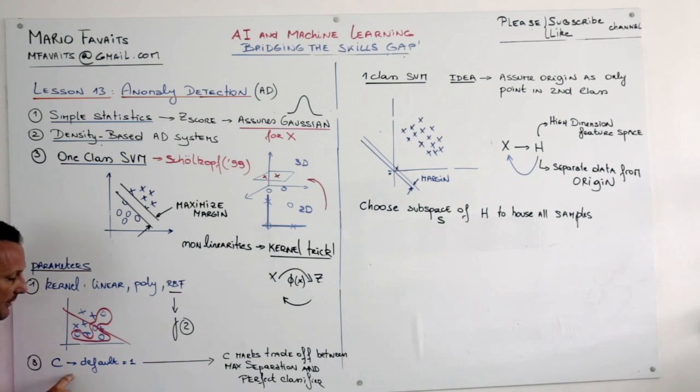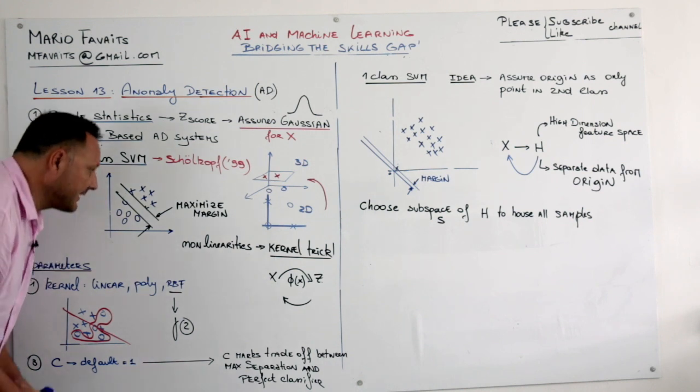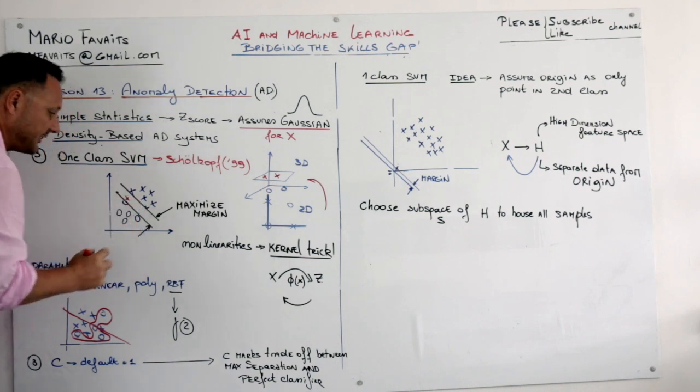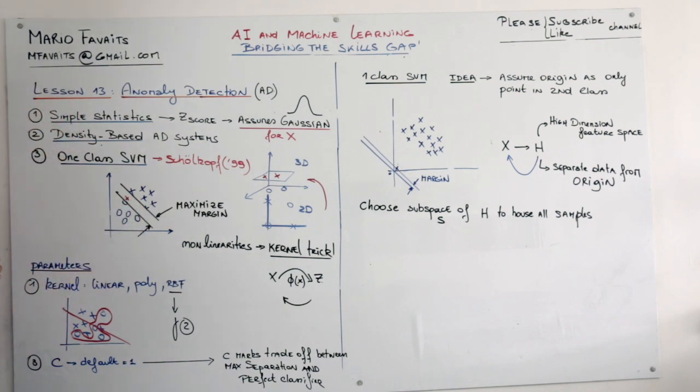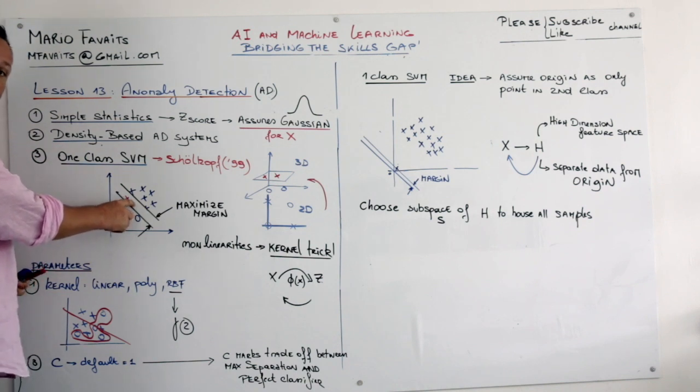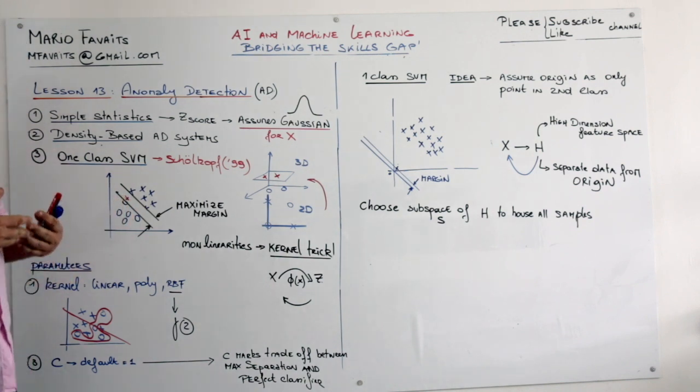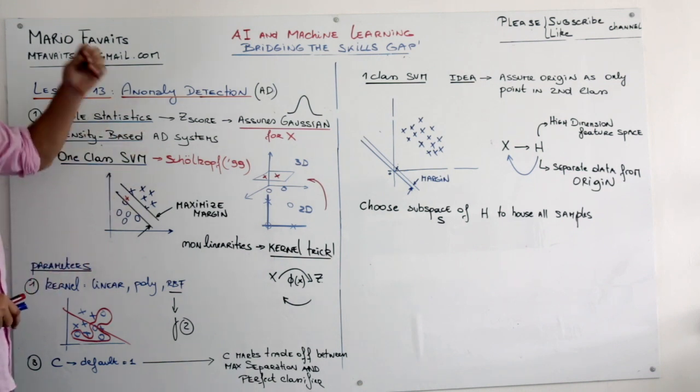There was a third parameter that was C and the default of C was 1. And C basically trades off between maximizing the margin and having a perfect classifier. If I give you an example here, and I put a point here in the middle, I can do two things. I can move this line here, but this will reduce my margin. Or I could just live with it. There is a sense of impurity or a soft margin on this plate. So these were the parameters.